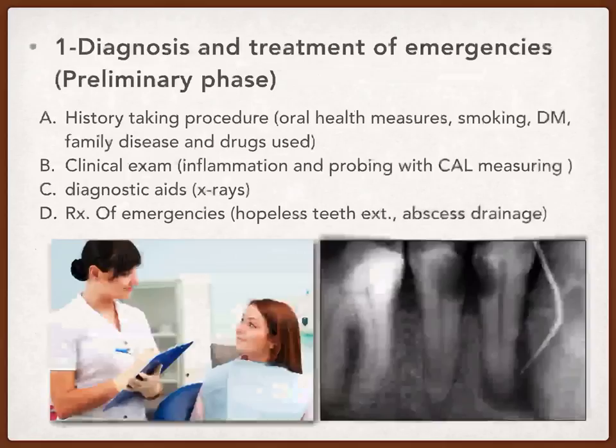The first step is the diagnosis and treatment of emergencies, also known as the preliminary phase. In this phase, we take the patient's history about oral health measures, smoking, dental health, medical health, family diseases, and drugs used. We then do a clinical examination using inspection to see if there is inflammation, palpation to do probing and measure the clinical attachment level, and percussion to assess periodontal disease.